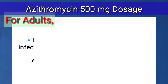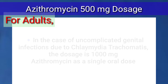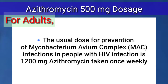In the case of uncomplicated genital infections due to Chlamydia trachomatis, the dose is 1000 mg as a single oral dose. The usual dose for Mycobacterium avium complex (MAC) infections in people with HIV infection is 1200 mg taken once weekly.